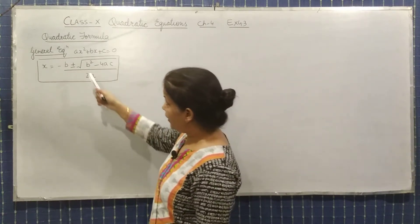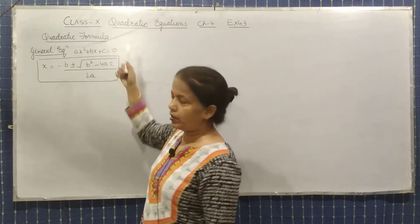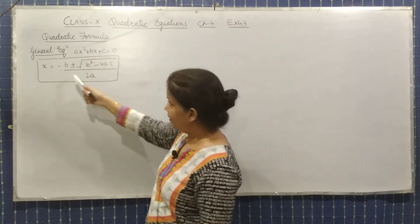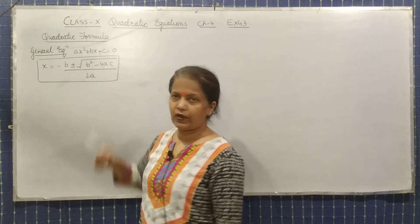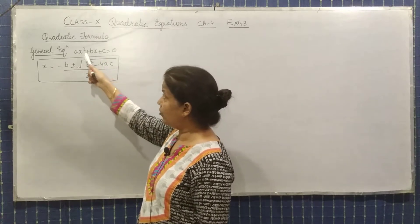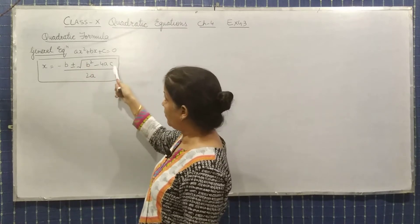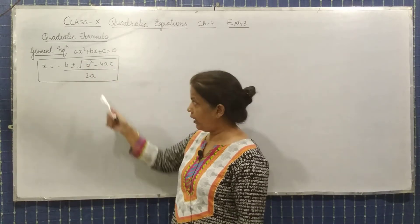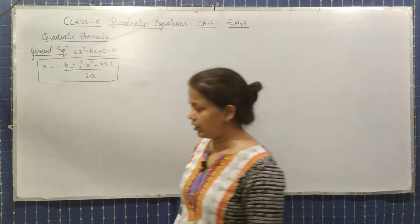Now, what are these values? Compare these values in the general quadratic equation. What is b? B is the coefficient of x. What is a? A is the coefficient of x². And what about c? C is the constant term. And the denominator is 2a. So this is the quadratic formula.